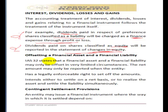It is also possible to offset a financial asset against a financial liability, but only in very limited circumstances. The net amount may only be reported when the entity has a legally enforceable right to offset the amounts, and the entity intends either to settle on a net basis or to realize the asset and settle the liability simultaneously. These are the two conditions required for offsetting.